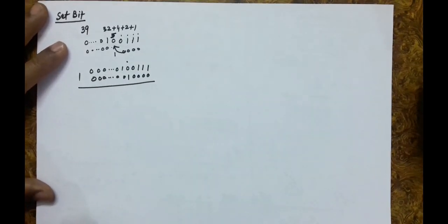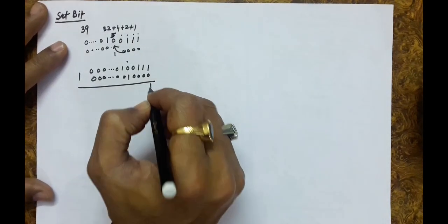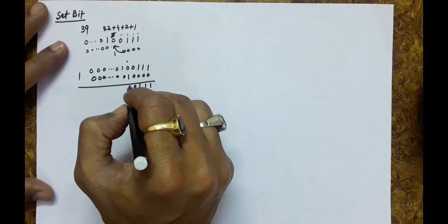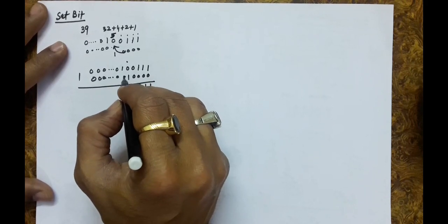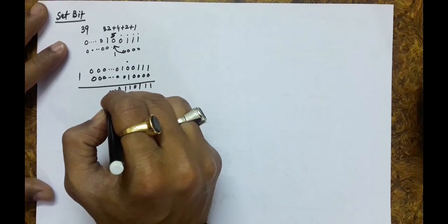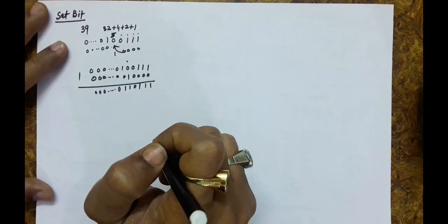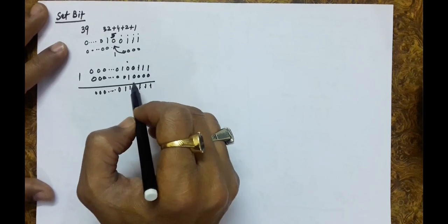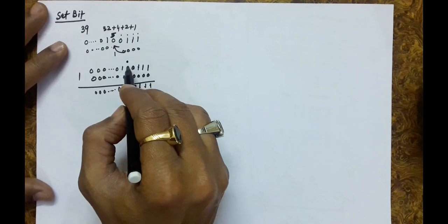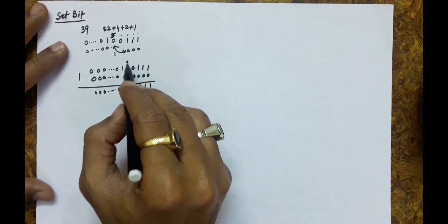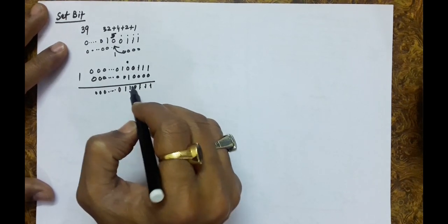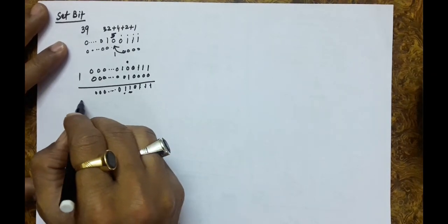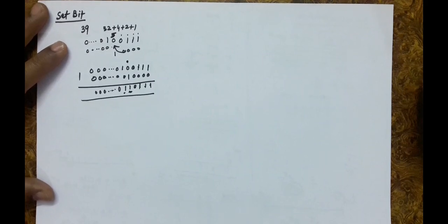There should be a number in which there are only 0s, but this 5th bit position should be 1. So the number 39 is 1 0 0 1 1 1, and there should be another number in which this 5th bit position is 1 and the rest of the bits are 0. Now, if we OR these 2 numbers — if we apply OR operation between these 2 numbers — 1 OR 0 will become 1, 0 OR 0 will become 0, 0 OR 1 will become 1. That's the change we wanted. So we have actually achieved the desired task, and for the rest of the number it will be 0. We should do this kind of operation by which we can set the bit.